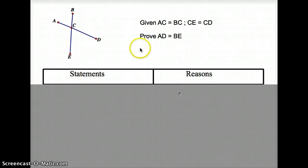In this video I'm going to go over a two-column proof dealing with segment addition. So if we look at this one, we have AC is equal to BC, CE equals CD, and what we're trying to prove is that AD equals BE.